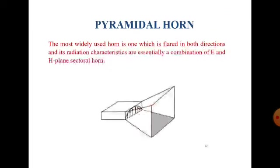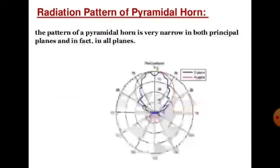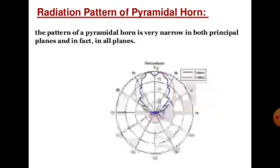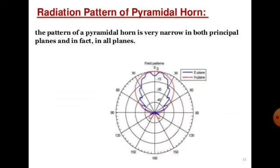The pyramidal horn is the most widely used horn and is one which is flared in both directions — that is, along both the electric field and the magnetic field. Its radiation characteristics are essentially a combination of the E-plane and H-plane sectoral horns. The radiation pattern of a pyramidal horn is very narrow in both principal planes — E-plane and H-plane — with the blue line denoting the E-plane and the red line denoting the H-plane.